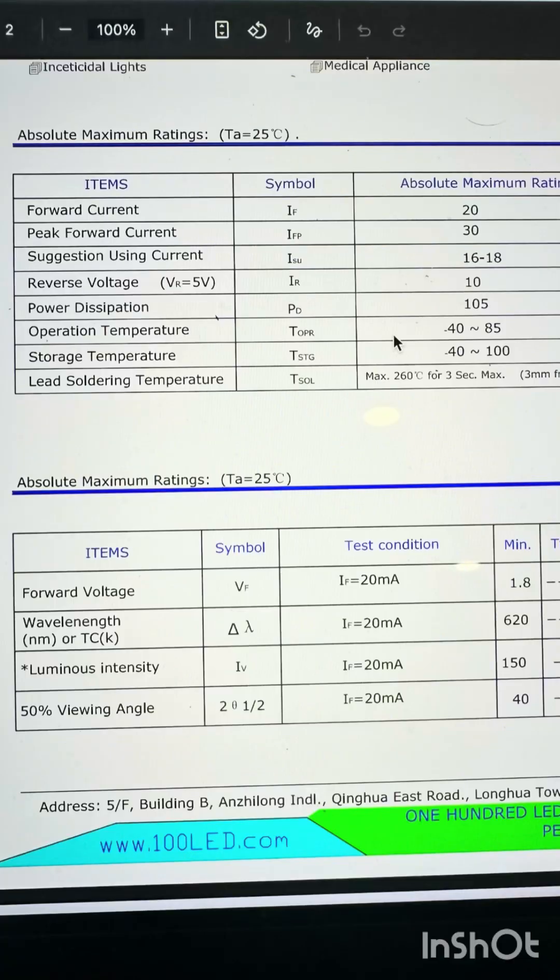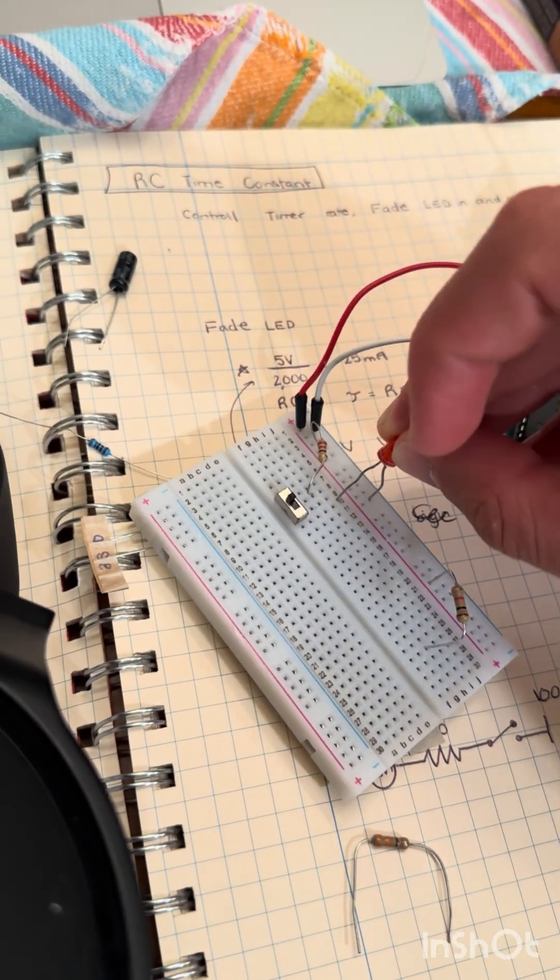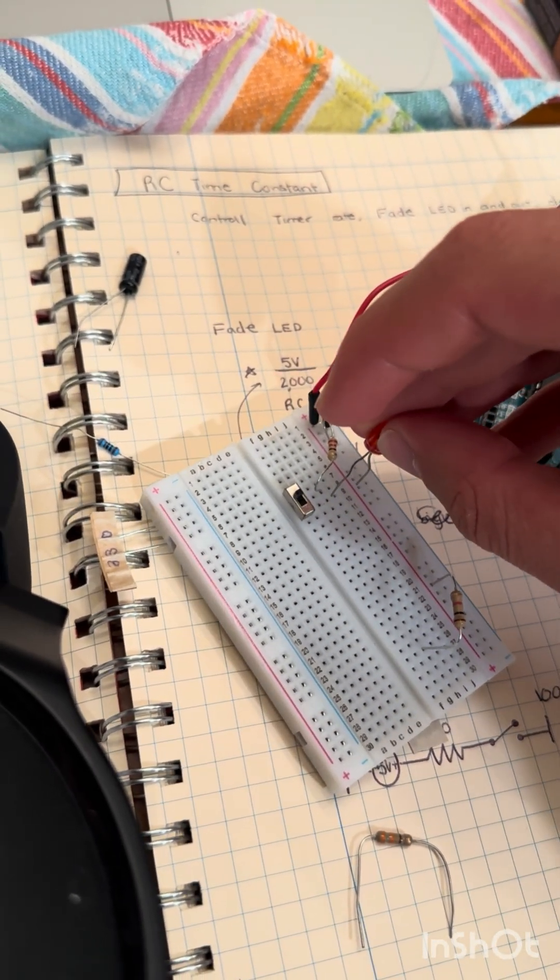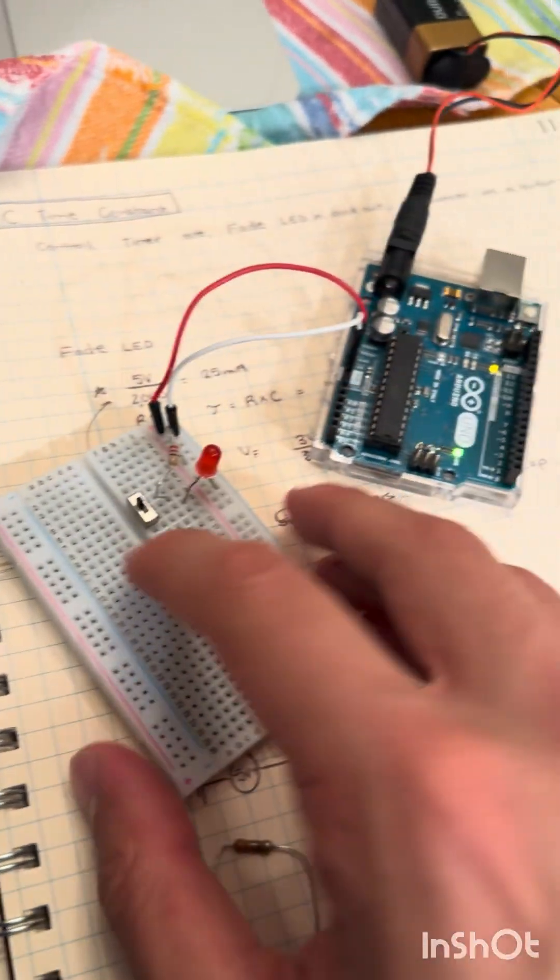We know we want it to have around 15 milliamps and it's going to take in 2 volts. The power supply is from an Arduino supplying 5 volts, so when we switch this switch on, we should see the LED turn on.